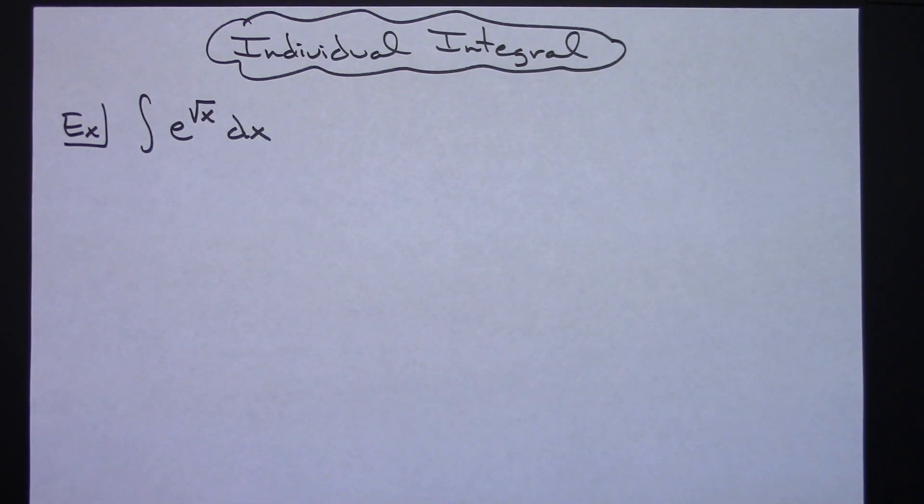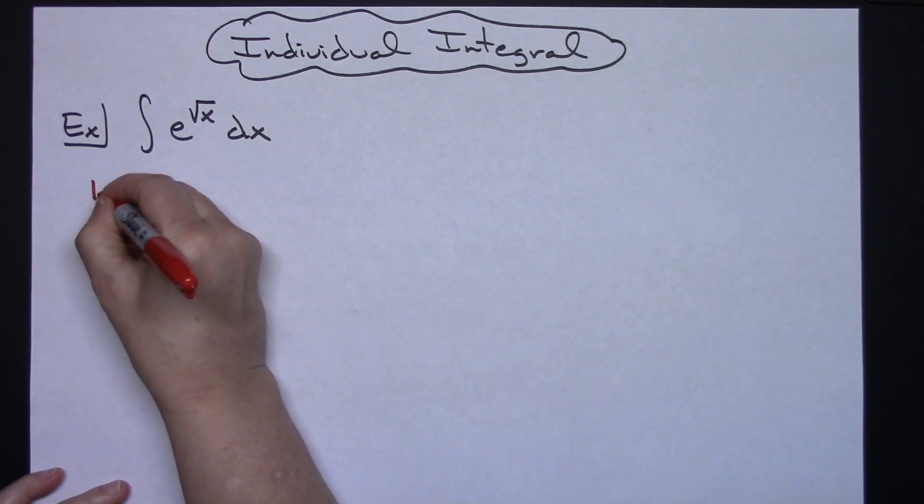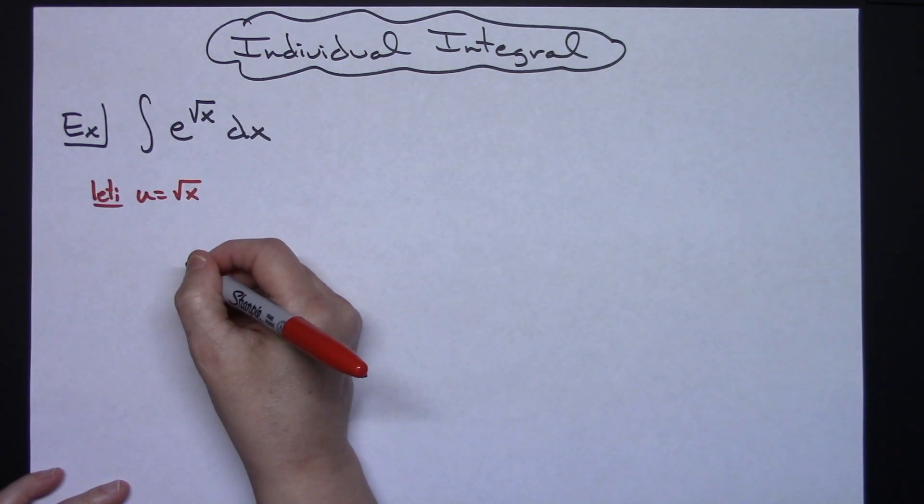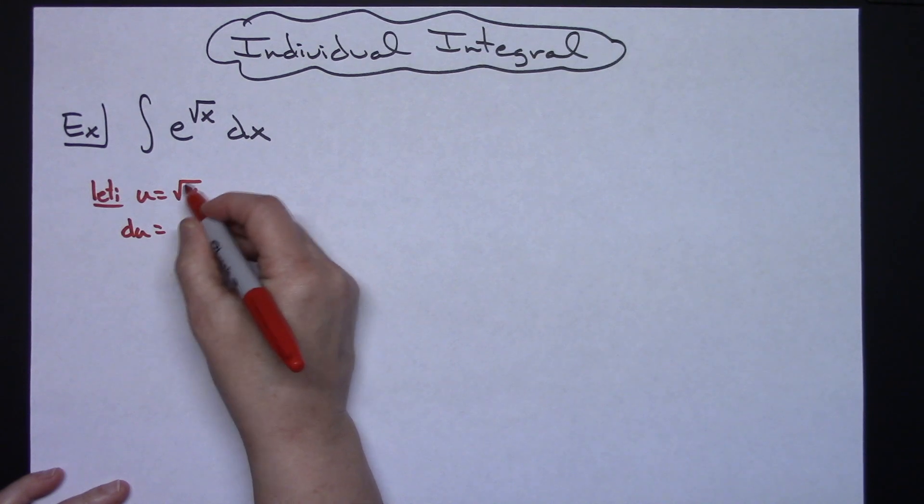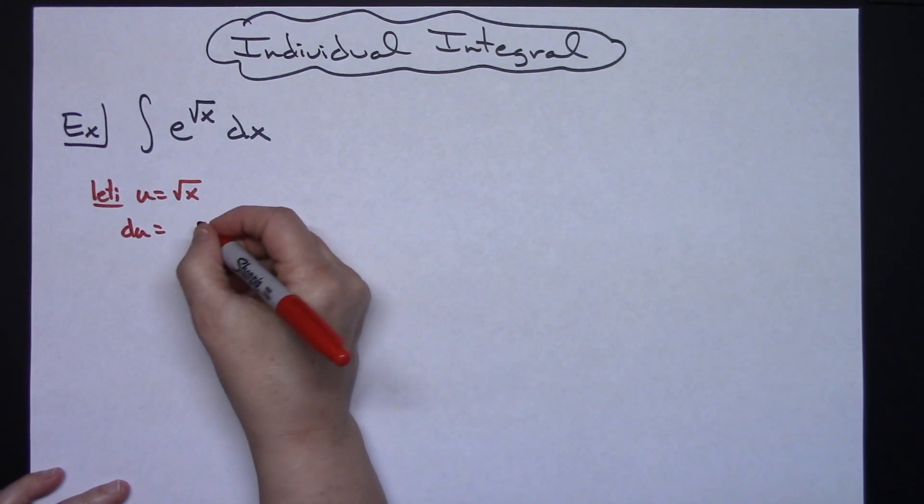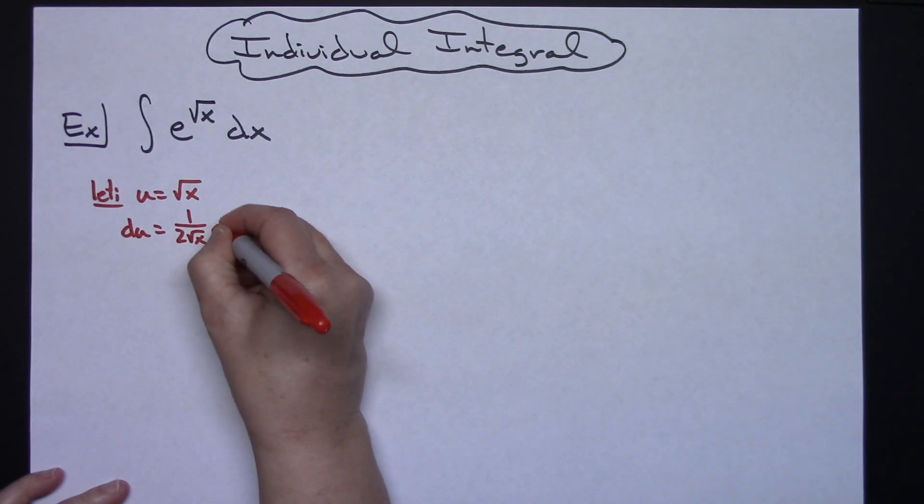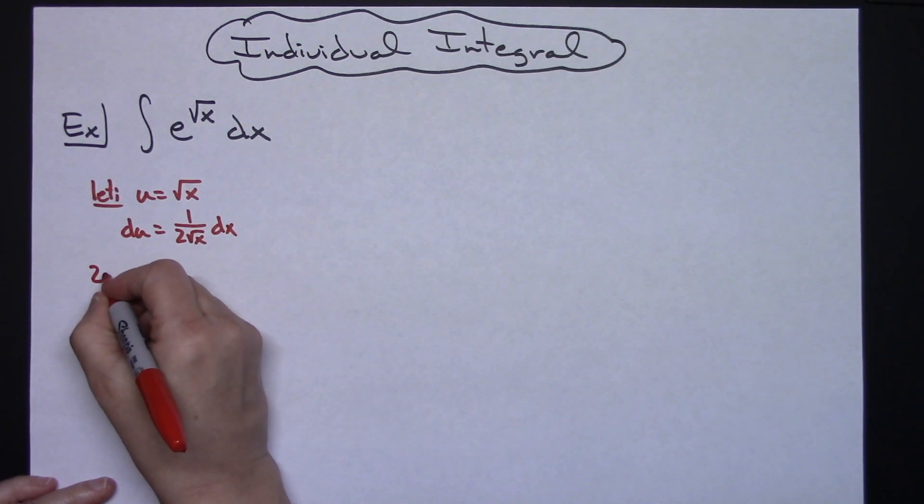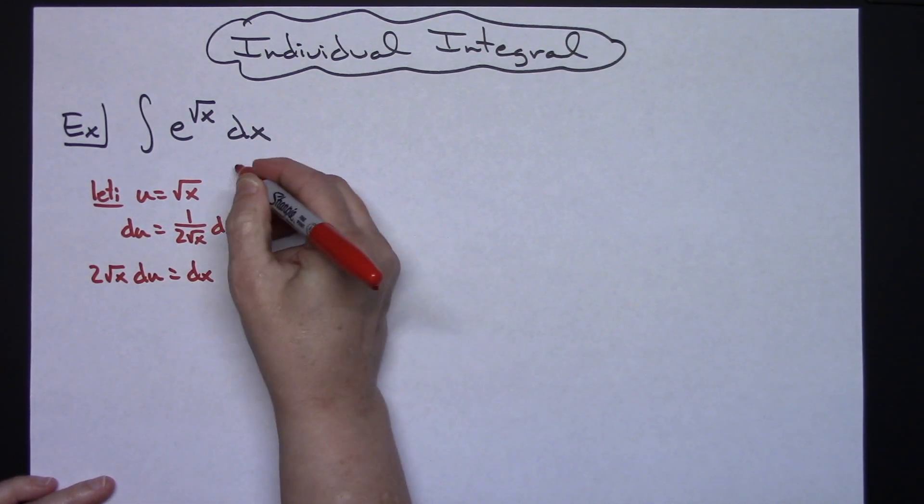So for starters here I am going to let my u be that square root of x. So I'm going to let u equal the square root of x. Then taking the derivative of both sides, it is going to be 1 over 2 square root of x dx. And if I go ahead and solve all the way down for dx, then I would have 2 square root of x du is equal to dx.